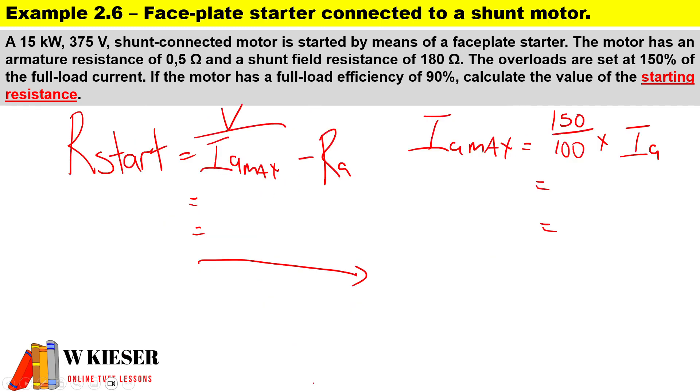Now we want to protect this motor. To work out the maximum current that the armature can reach, we take our overload, which is 150 divided by 100, times the armature current. The armature current was 42.362. Therefore, Ia max will be equal to 63.543 amps.